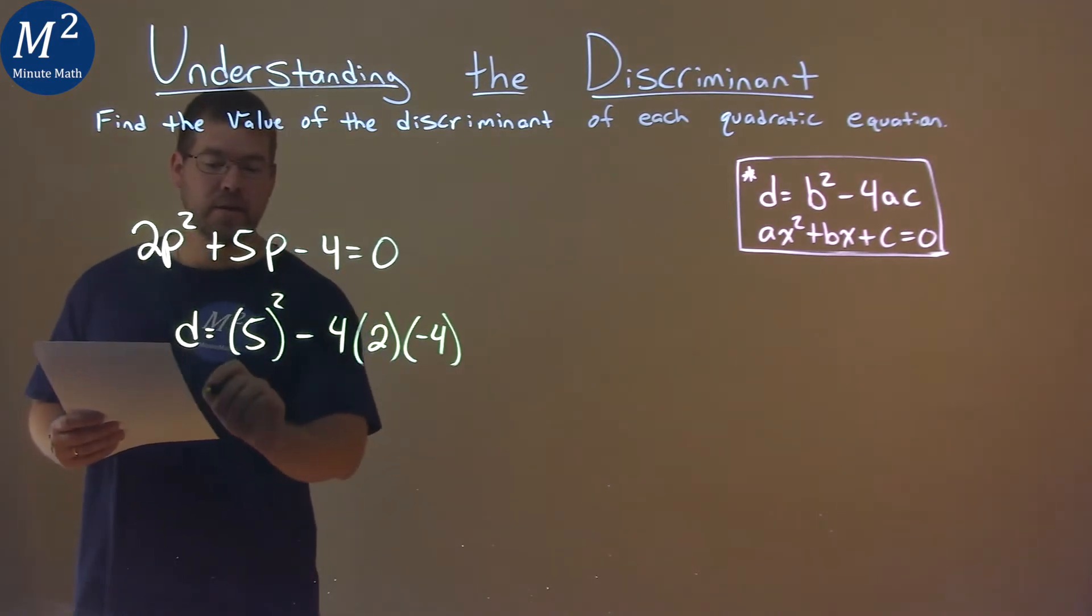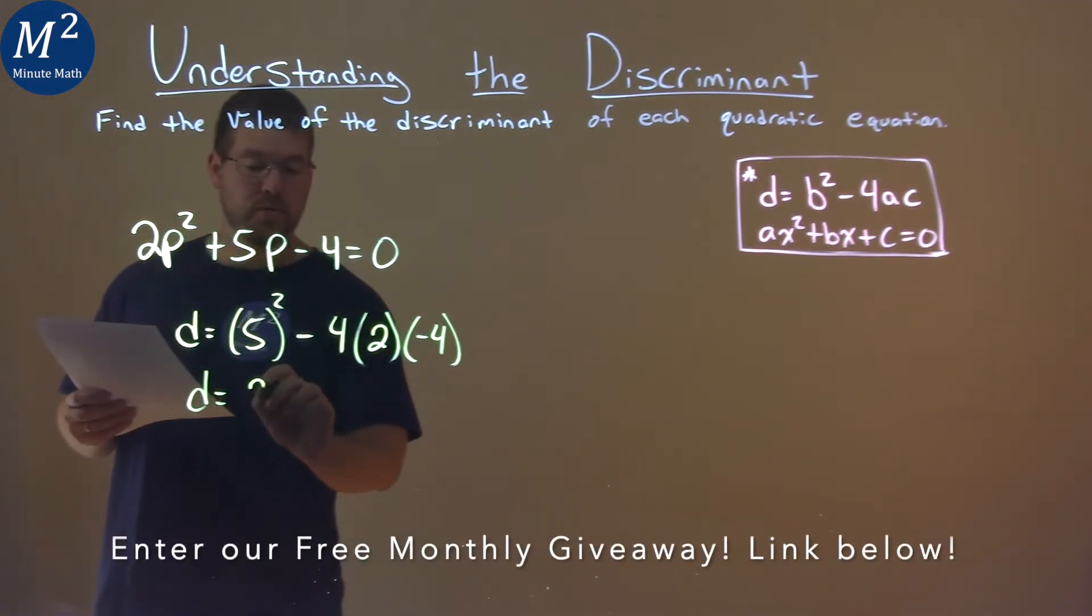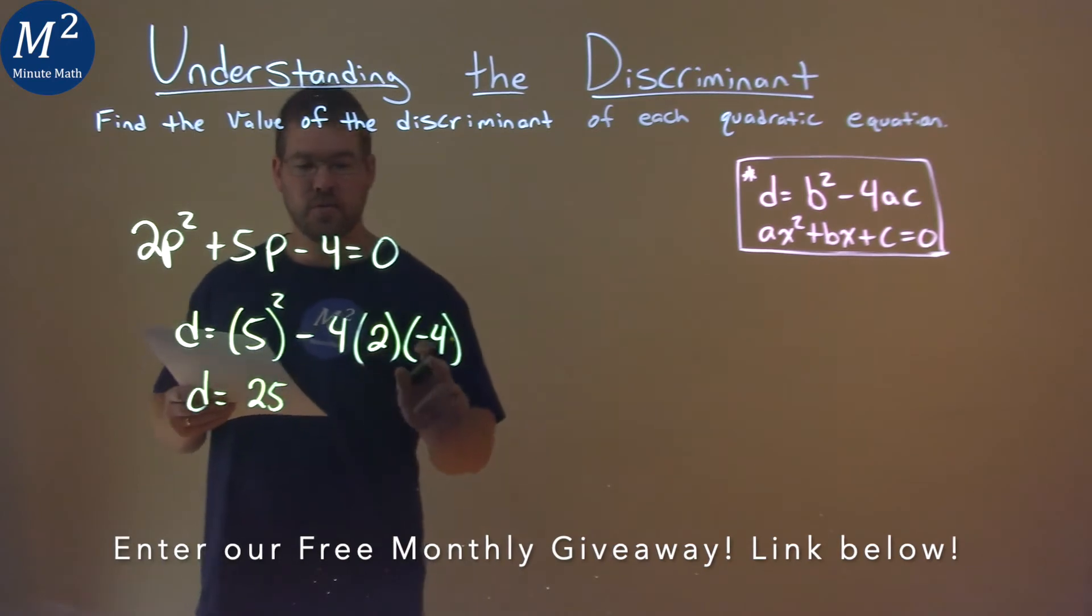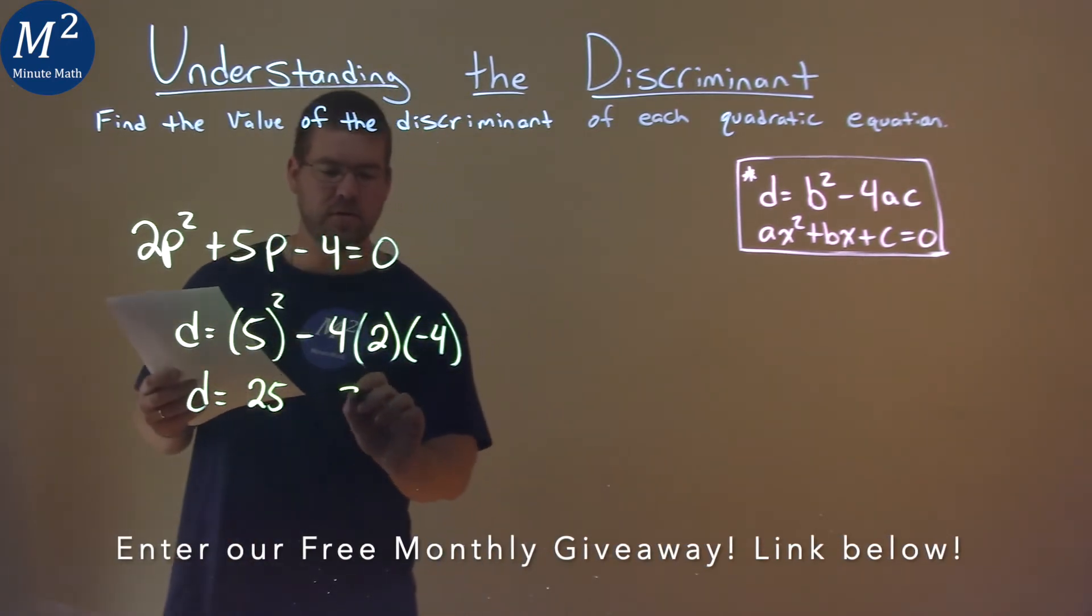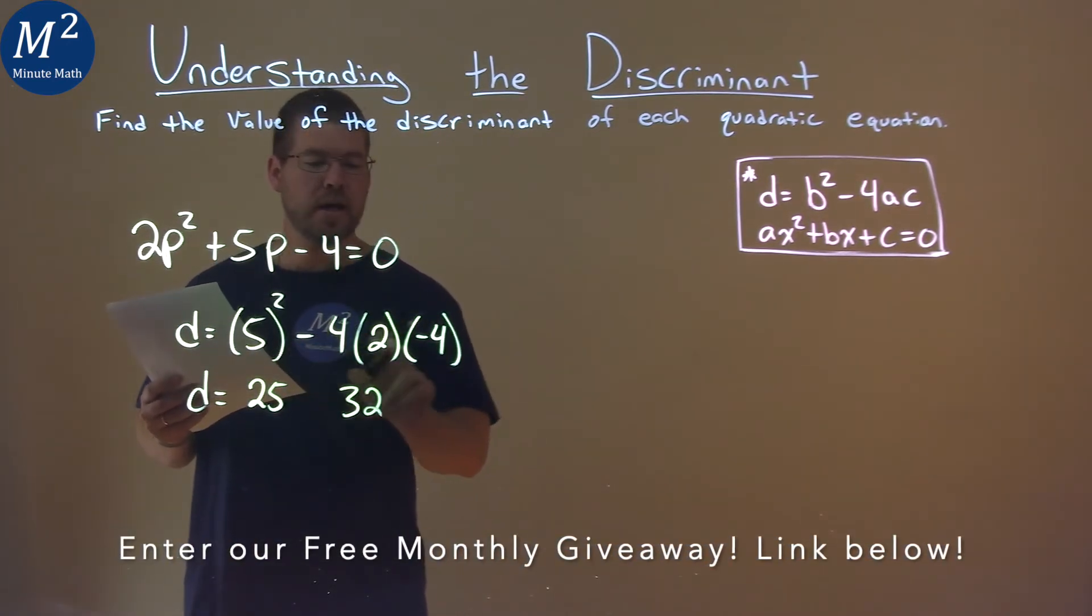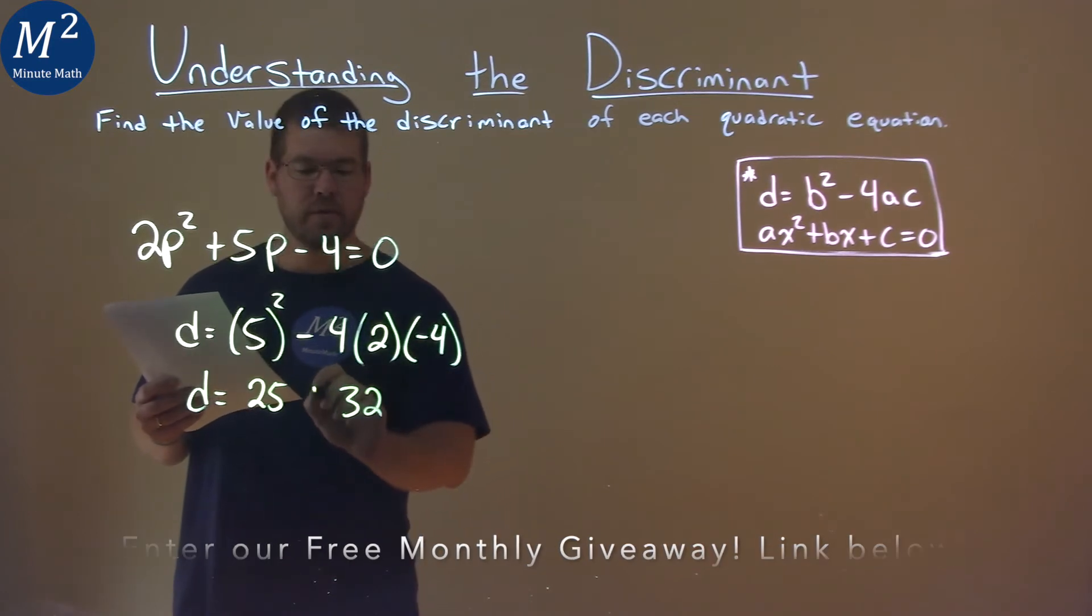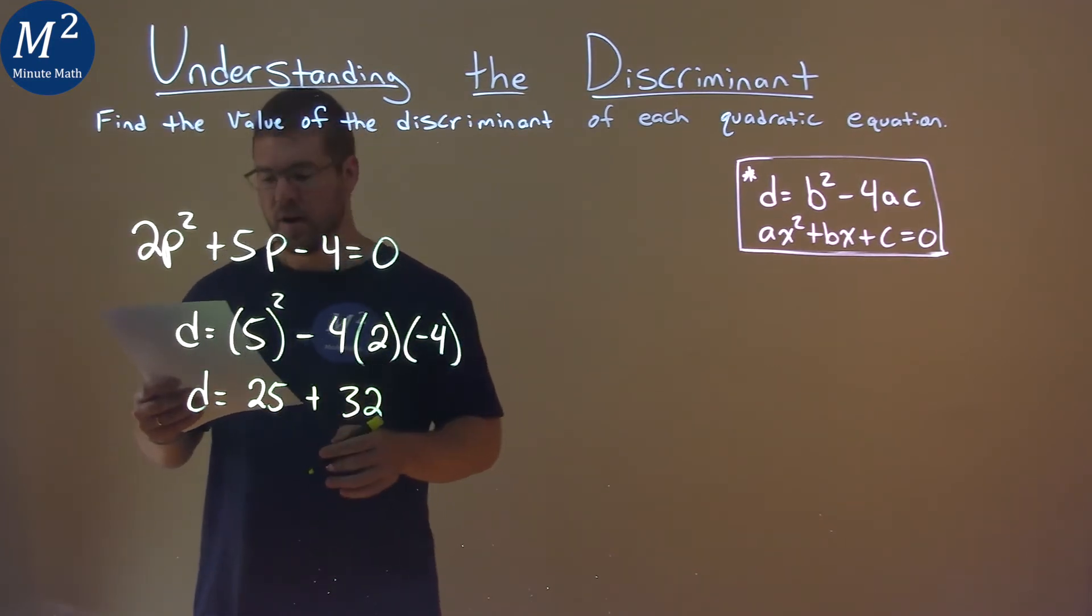And now we need to solve. 5 squared is 25, 4 times 2 times 4 is 32, two negatives being multiplied makes that a positive.